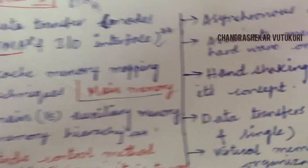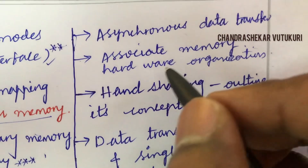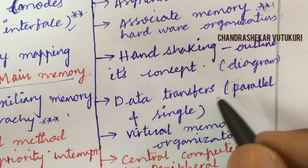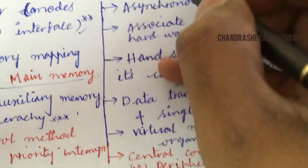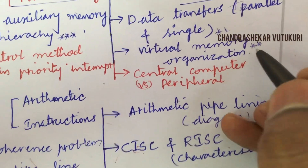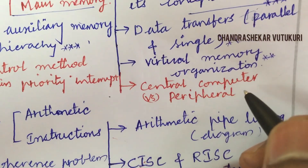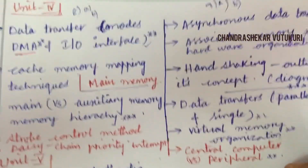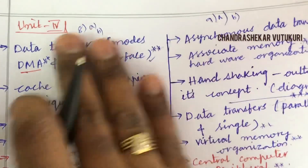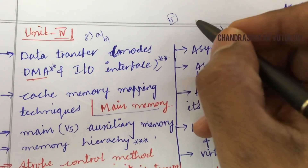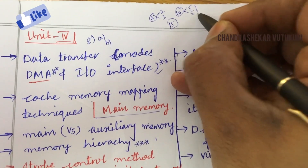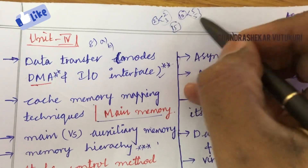Asynchronous data transfer and associative memory hardware organization is the top question for 9A. Hardware handshaking and its concepts along with the diagram is the top gunshot question for 9B. Data transfers in parallel and serial may be a short question. Virtual memory organization is a short question, and the difference between computer central processing and peripherals may also be asked from Unit 4. You should be thorough with the complete unit to score 15 marks, covering two short questions (2+3 marks) and one long question (5+5 marks).